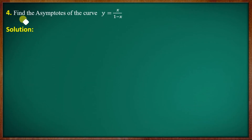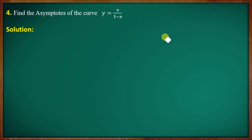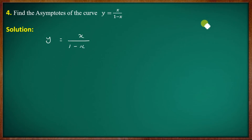Find the asymptotes of the curve y equal to x by 1 minus x.